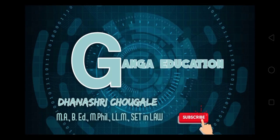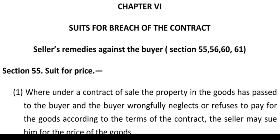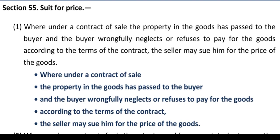Hello everyone, this is Tan Sri Chougle and you're watching Ganga Education. Welcome back to my channel. In today's lecture, we are going to discuss suit for breach of contract from the Sale of Goods Act 1930. The provisions regarding suit for breach of contract are mentioned in Chapter 4 of the Sale of Goods Act 1930, from Section 55 to 61 — the provisions regarding the seller's remedy against the buyer.